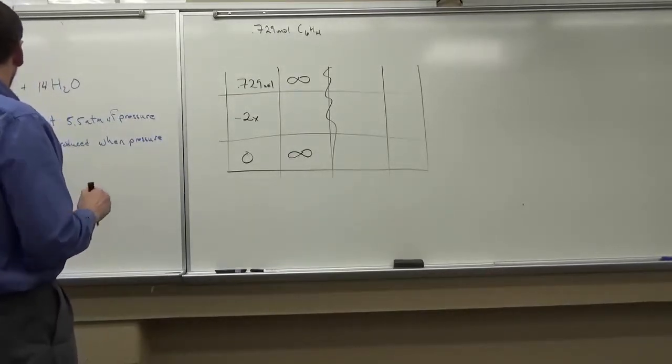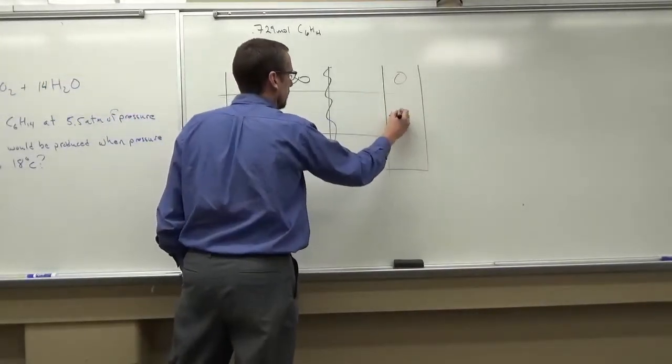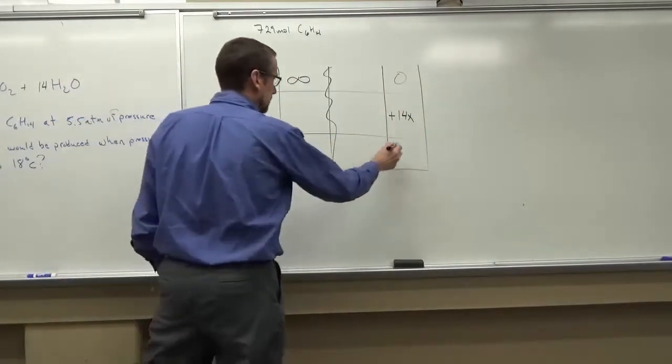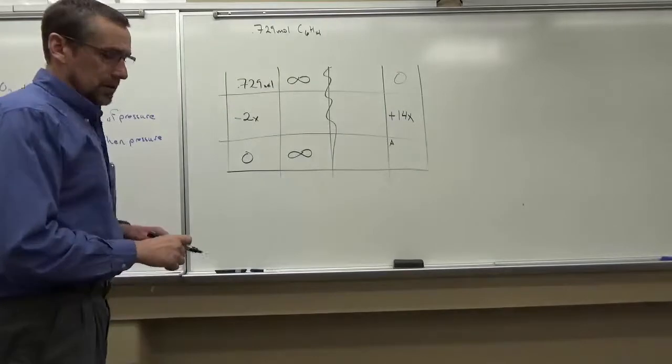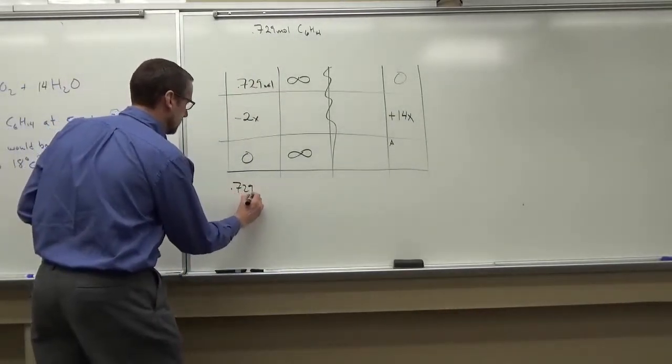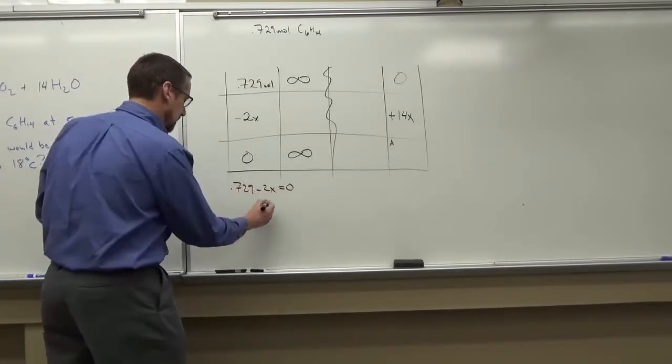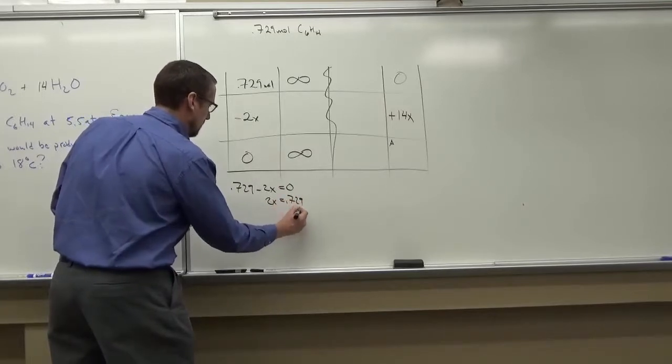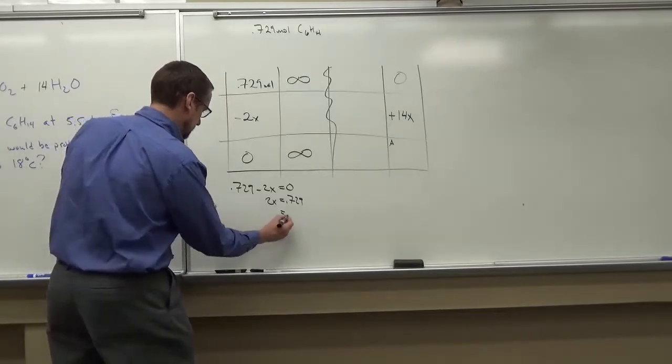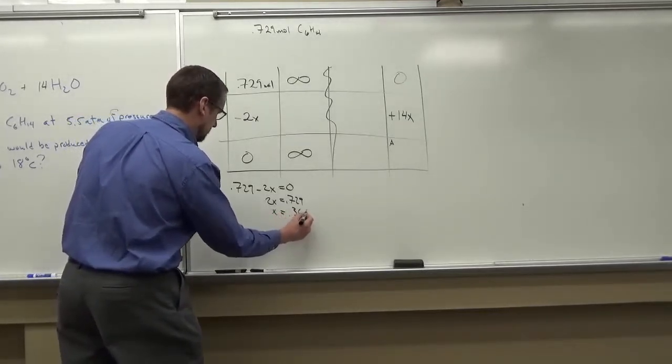I'm trying to figure out liters of water produced. So water is going to start at zero, go up by 14x. We're going to get an after value for water. So 0.729 minus 2x is going to equal zero. 2x is equal to 0.364.